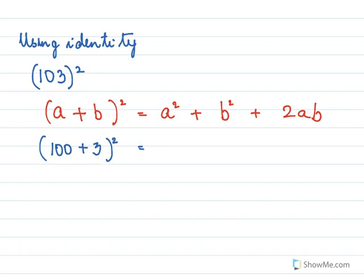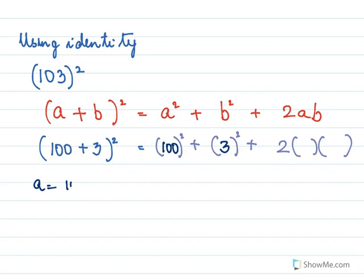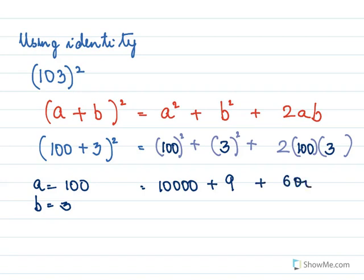So (a + b)² = a² + b² + 2ab, where a is 100 and b is 3. So a² is 100 × 100 = 10000, b² is 3² = 9, and 2ab is 2 × 100 × 3 = 600. When we add this up, we get 10609, which means 103² = 103 × 103 = 10609.